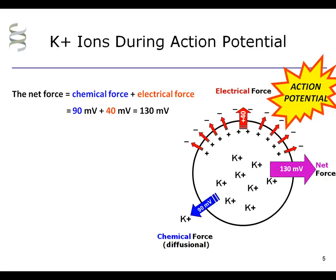During the action potential, the electrical force on potassium reverses, because during the action potential the membrane becomes positive inside. However, during the action potential, the chemical force does not change. The magnitude of the net force at the peak of the action potential is 90 millivolts outward plus 40 millivolts outward, which equals a total of 130 millivolts outward.